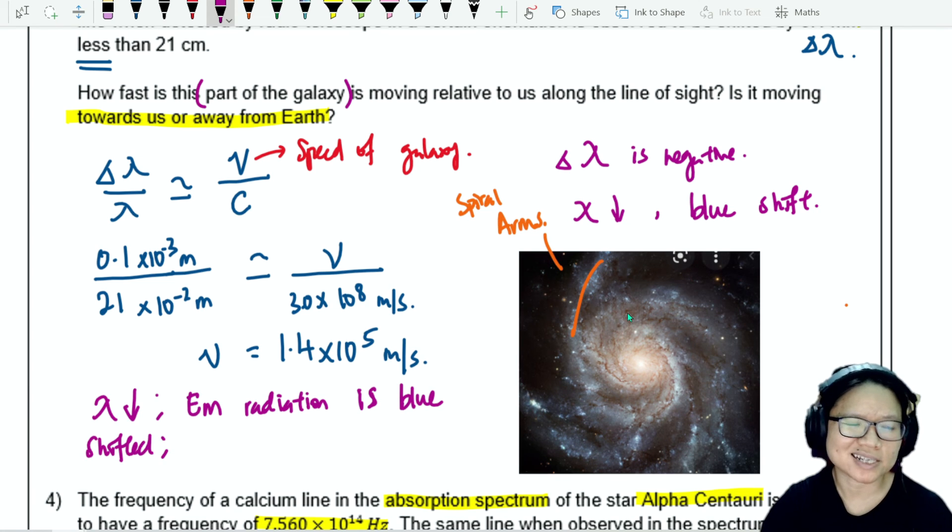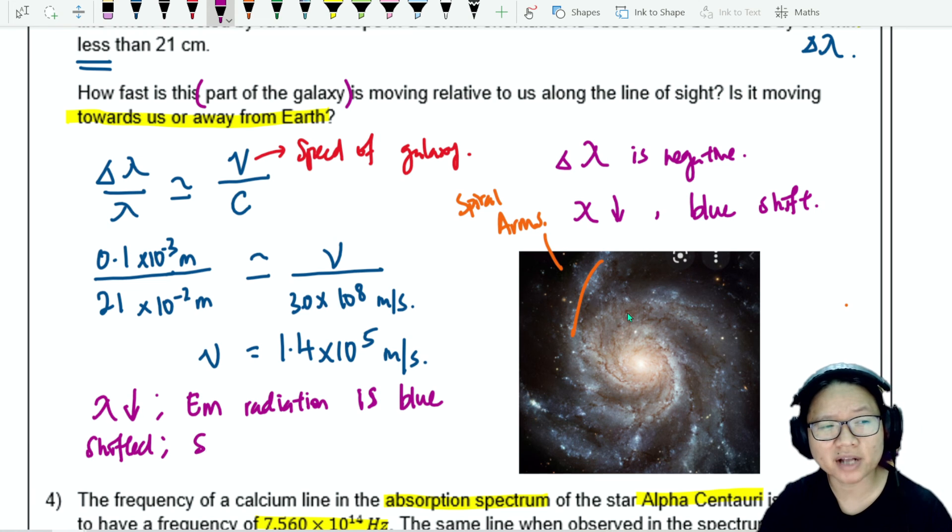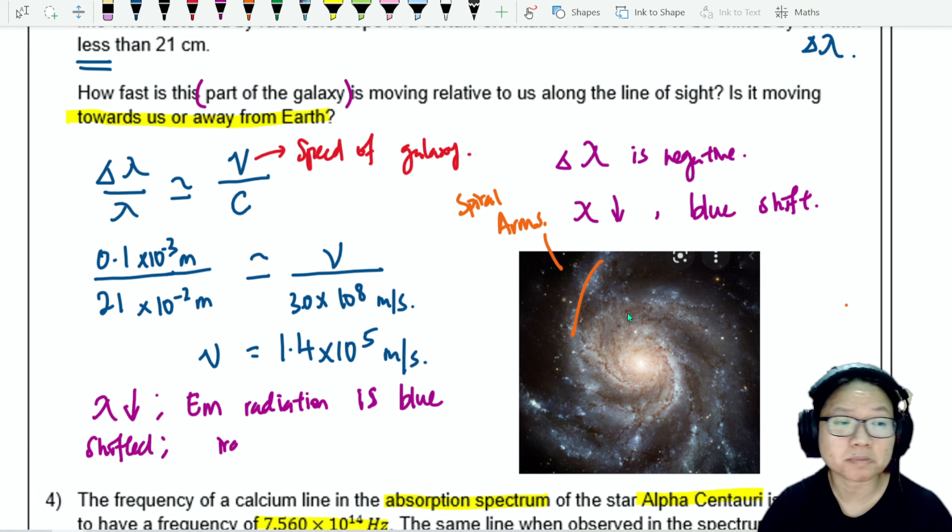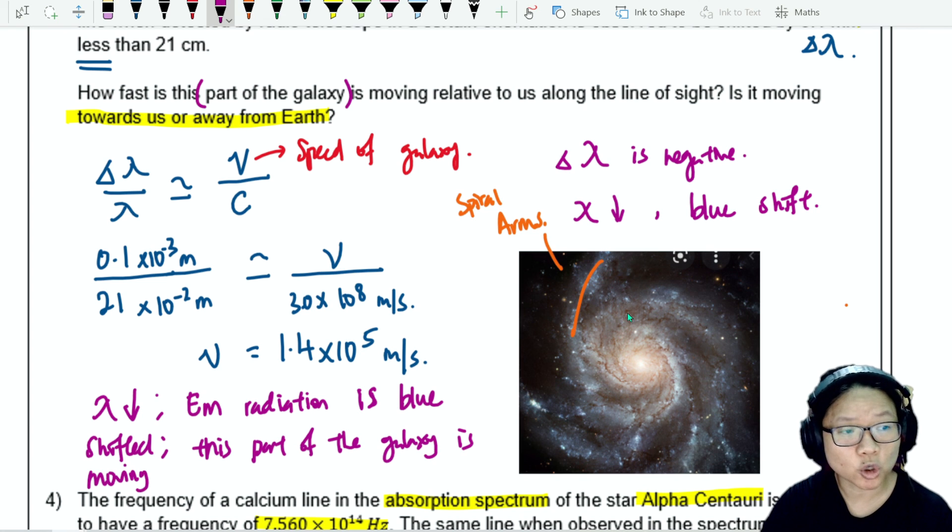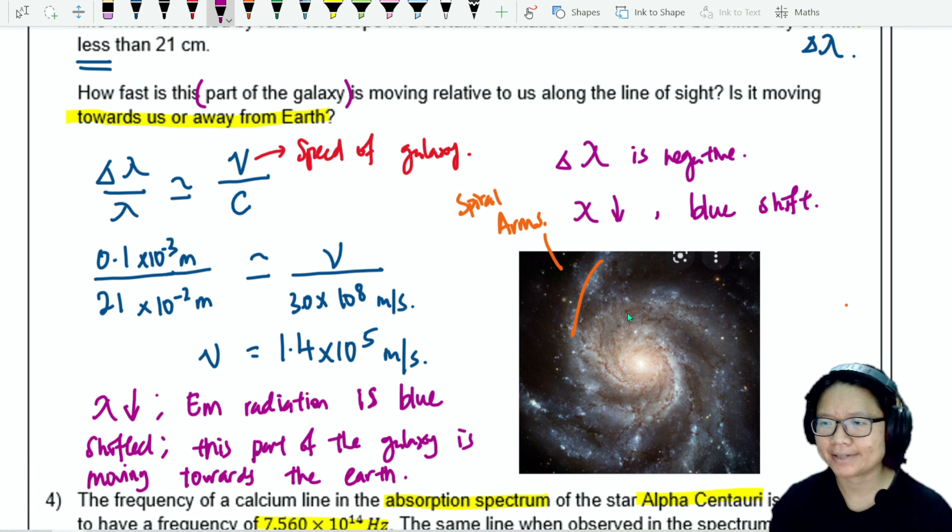This means the galaxy or the spiral arm, this part of the galaxy is moving towards us, towards the Earth. That's it for this question. Our universe is kind of cool. See you in the next one. Stay lit.